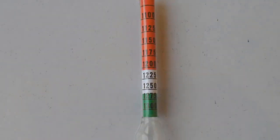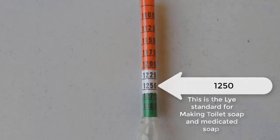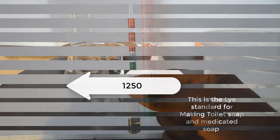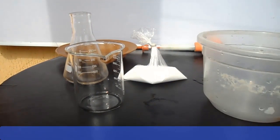Now let's prepare lye solution for toilet soap or medicated soap. This means that we will adjust the reading of the hydrometer to 1250 by adjusting the quantity of caustic soda or the volume of water used. Alright, we are now into the preparation proper.